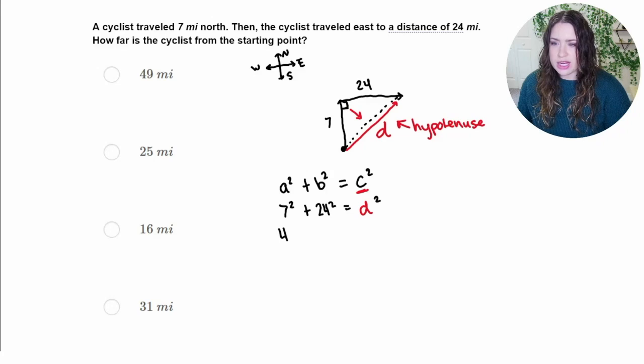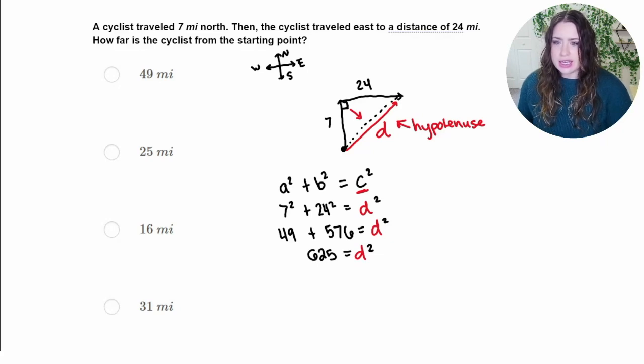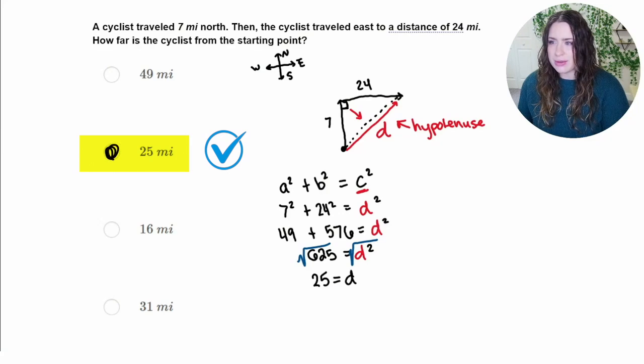And 24 squared is 576. Use that calculator. And that's going to equal d squared. Now I'm going to go ahead and add these two together. 49 plus 576 is 625. Again, use that calculator. No use getting it wrong because you added wrong. And then finally, our last step here to get d by itself, we want to get rid of the squared. And the way that we do that is by square rooting both sides of the equation. And the square root of 625, when you put it in the calculator, is going to be 25. So d is equal to 25 miles, which is the correct answer right there.